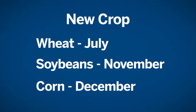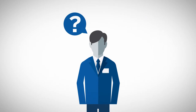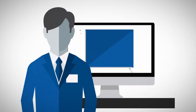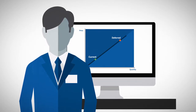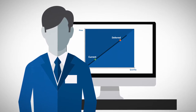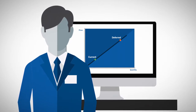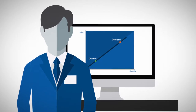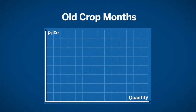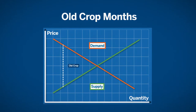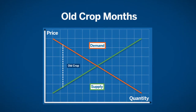Each grain commodity has one new crop futures delivery month, and all others are old crop months. You might think intuitively that grain futures trading further out in time would likely be priced higher than grain trading in the current or nearby futures delivery months, because of factors such as carrying costs, storage, etc., which could cause higher prices in those deferred months. However, when you take a closer look at the grain markets during the old crop and new crop months, you'll understand why that is not necessarily always the case.